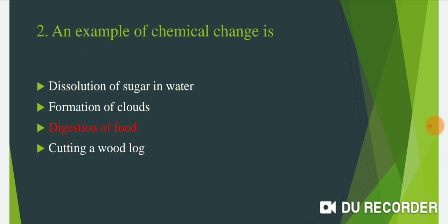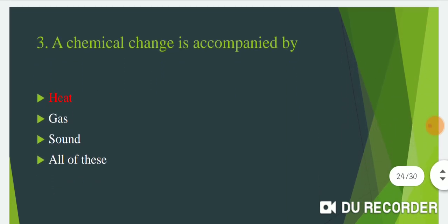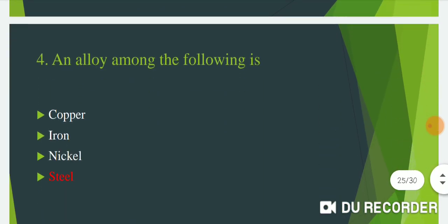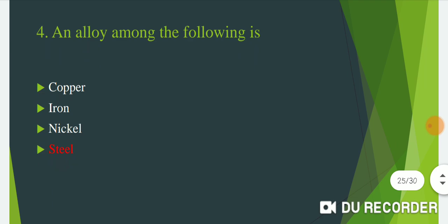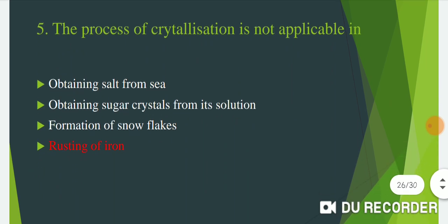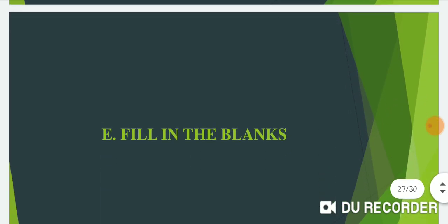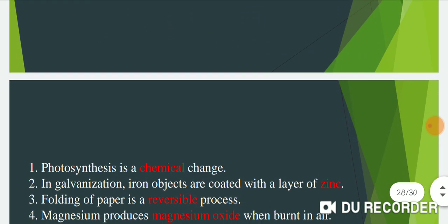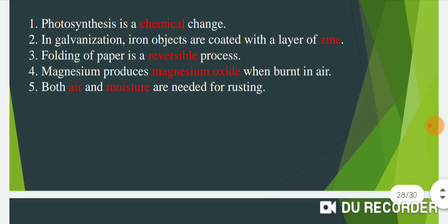Question number three: A chemical change is accompanied by — the answer is heat. Question number four: An alloy among the following is steel. The process of crystallization is not applicable in — the answer is rusting of iron.